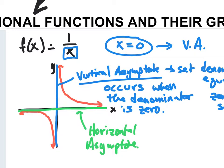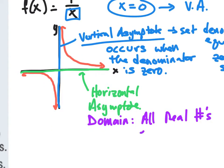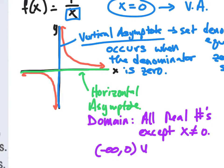Setting denominator to zero allows us to calculate our domain. The domain here is all real numbers except x cannot equal zero. In interval notation, we write this as negative infinity to zero, union with zero to positive infinity. All values except zero — all numbers leading up to zero we have points, all numbers after zero we have points, but not at zero. That's undefined.